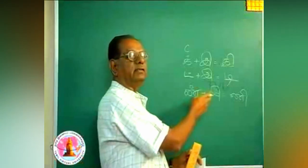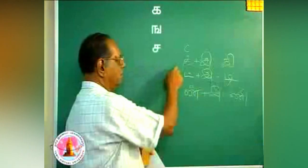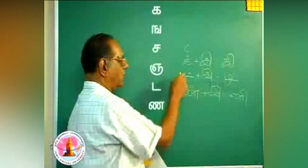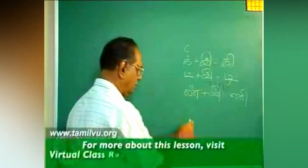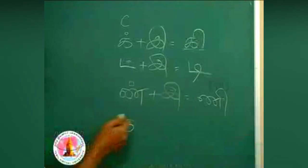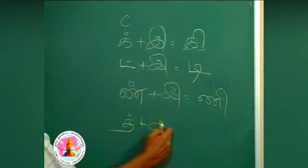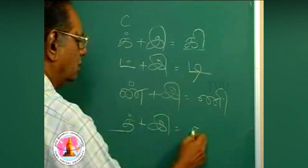N plus i, ni. Ka, na, cha, na, na, ta, na. Then the next letter is ta. With a dot above, it becomes t. And you add this vowel, it becomes ti.